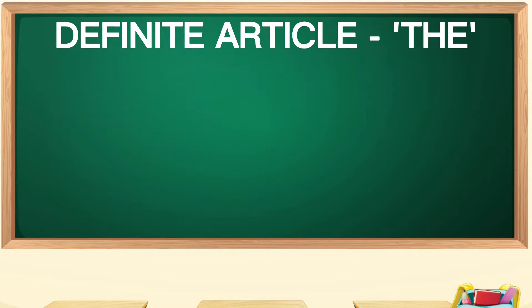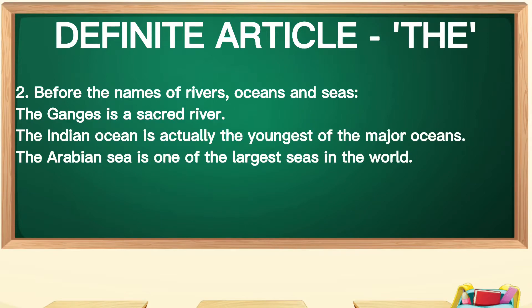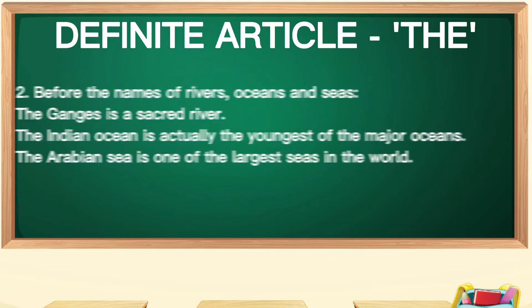The second point: the is used before names of rivers, oceans, and seas. For example: 'The Ganges is a sacred river.' 'The Indian Ocean is actually the youngest of the major oceans.' 'The Arabian Sea is one of the largest seas in the world.'